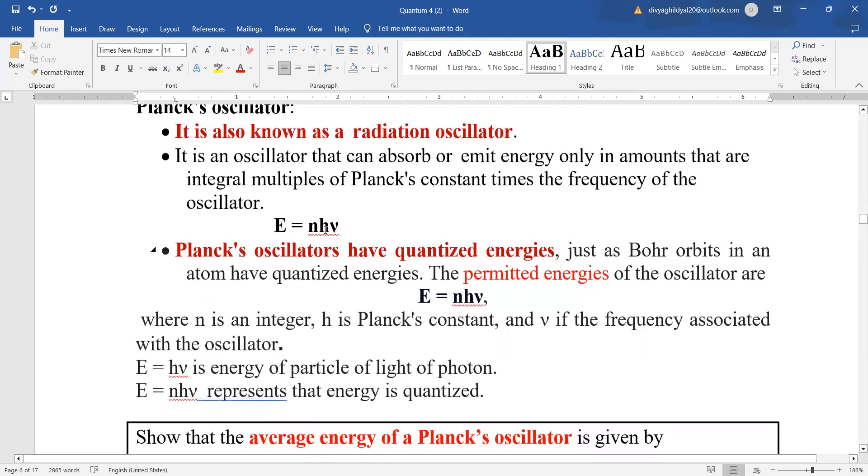E is equal to nhμ. Planck's oscillators have quantized energies just as Bohr's orbit in an atom have quantized energies. The permitted energies of the oscillator are E equal to nhμ where n is an integer, h is Planck's constant and μ is frequency associated with the oscillator. So, E equal to nhμ basically represents the quantized energy.